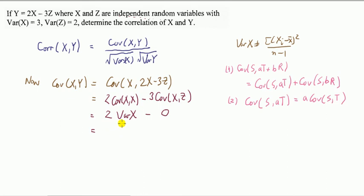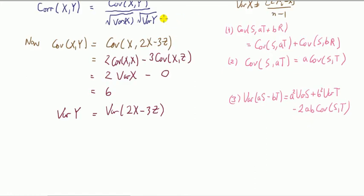So we can calculate this - this is just 2 times the variance of X, which is 3, so it's 6. Next I need to find the variance of Y.